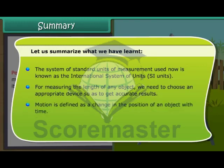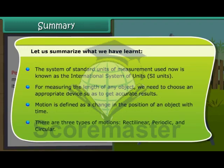Motion is defined as a change in the position of an object with time. There are three types of motions. Rectilinear, periodic and circular.